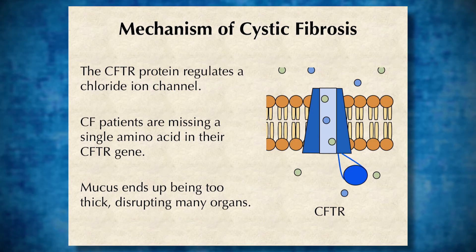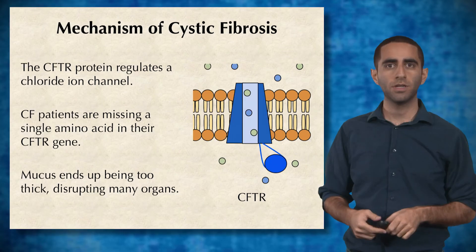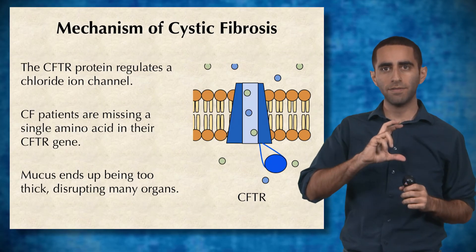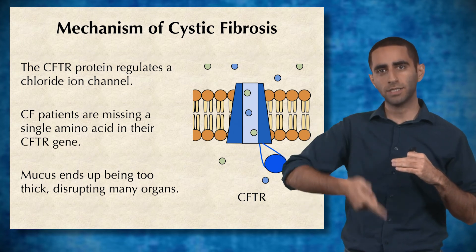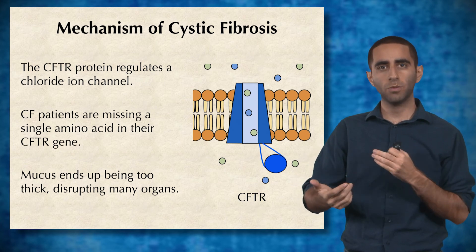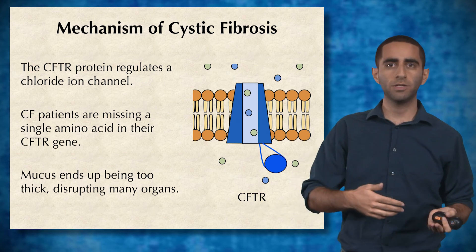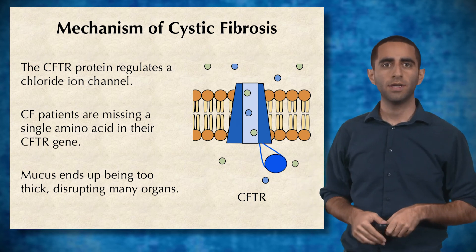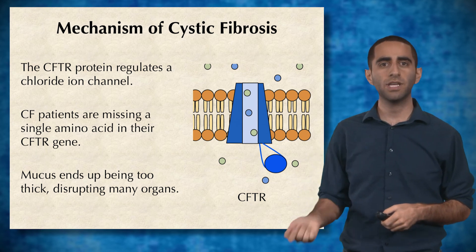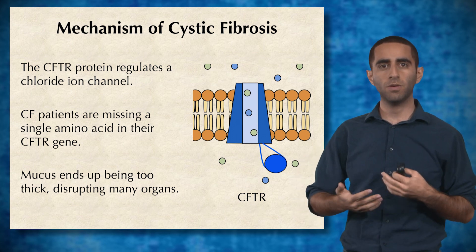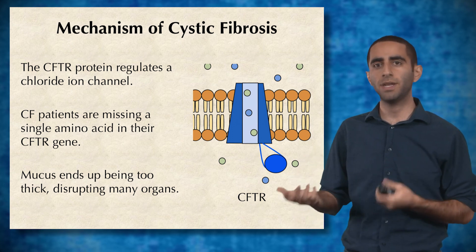The mechanism of how cystic fibrosis works: you have the CFTR gene that codes for the CFTR protein. This protein regulates the chloride ion channel — basically an ion channel across the membrane of a cell where chlorine ions can travel through — and CFTR regulates how much or how little chlorine ion can go through. Cystic fibrosis patients are missing a single amino acid in their CFTR gene, which results in their mucus being way too thick and disrupts many of their organs.